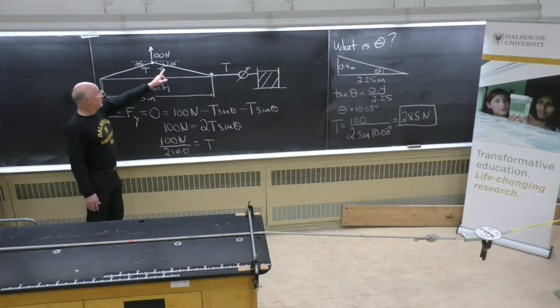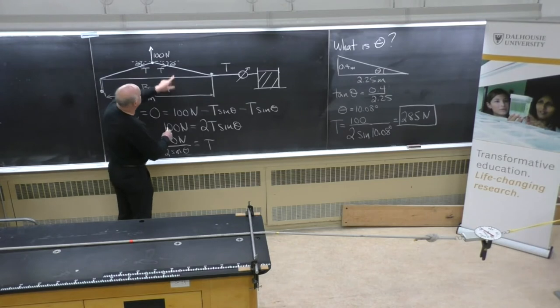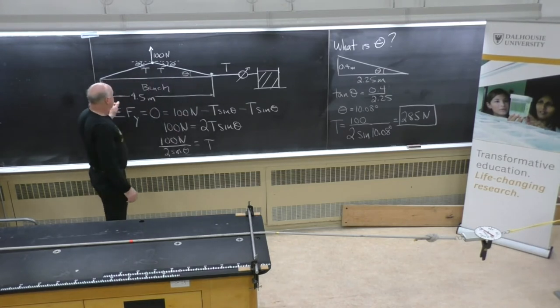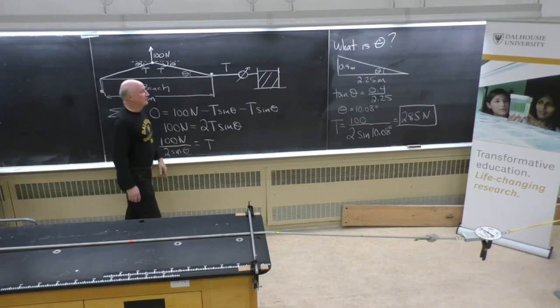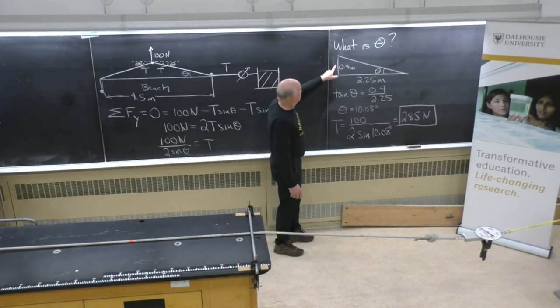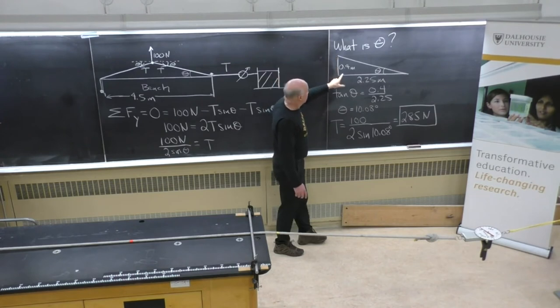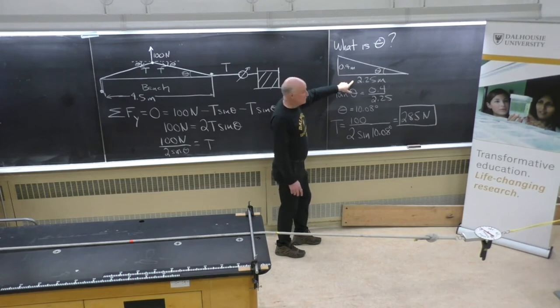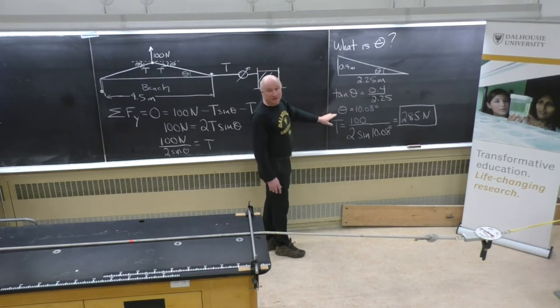We need to know this angle. The bench is 4.5 meters long. So the midway point is 2.25 meters from the corner. When I established 100 newtons of tension, the knot was 0.4 meters from the surface of the bench. So then we can figure out the angle theta because 0.4 meters divided by 2.25 meters would be the tangent of theta. If we then solve for theta, we get 10.08 degrees.